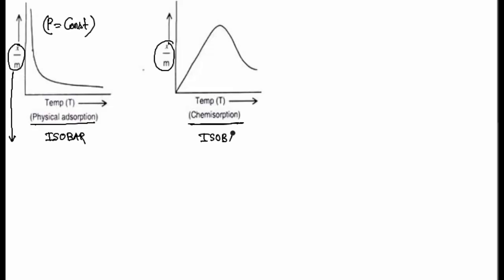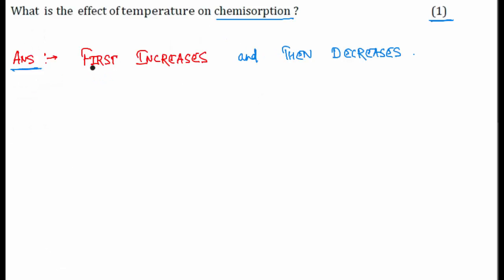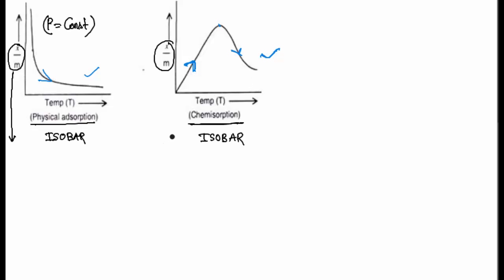From this graph it is very clear that in case of physisorption or physical adsorption, if you increase the temperature, the tendency or rate of adsorption decreases. But in case of chemisorption, when you increase temperature, the amount of adsorbate per unit amount of adsorbent first increases and then decreases, as you can see from the graph.